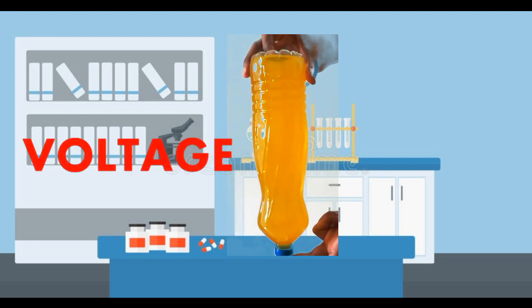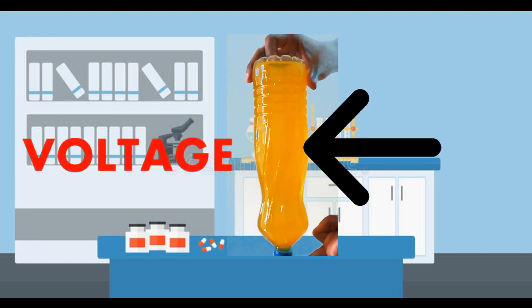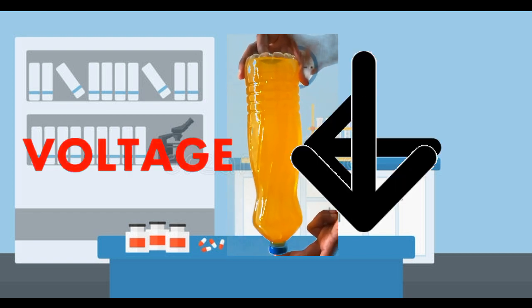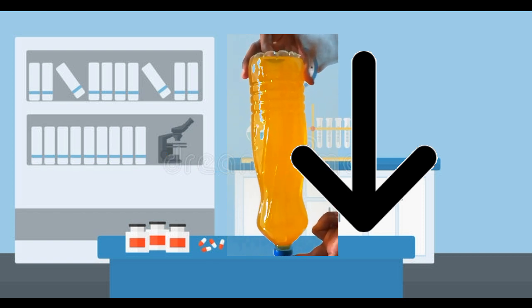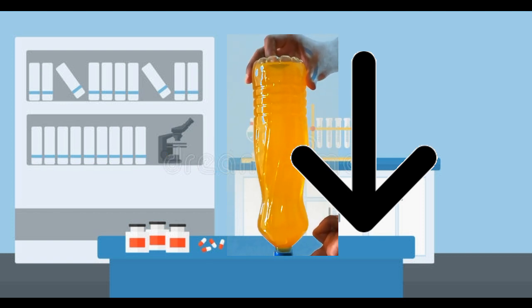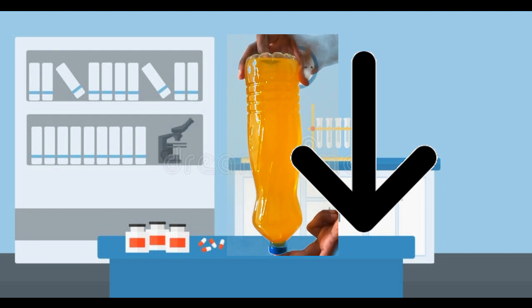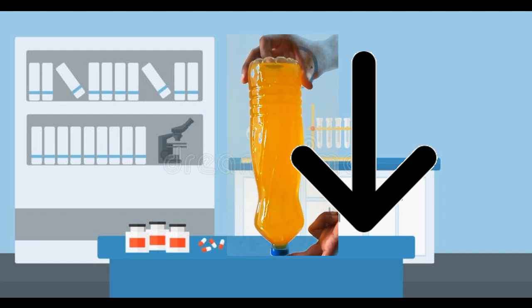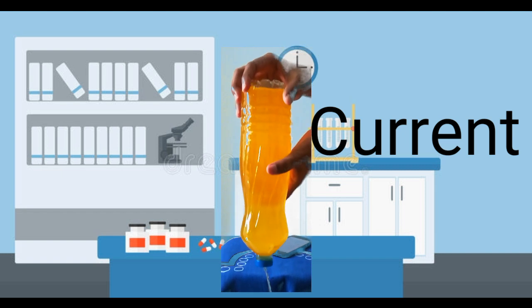The next is voltage. Here I consider water - how much amount of water is present in this water bottle. Normally voltage is the potential difference between two points. So here, water potential difference is upper to lower.